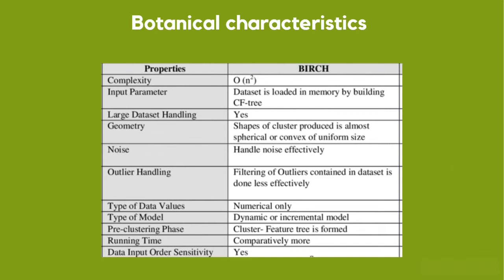What are its main characteristics? Its complexity is O(n squared). The input parameter dataset is loaded in memory by building a CF tree. Larger dataset handling: yes. Geometry: the shape of clusters produced is almost spherical or convex of unit size. Noise: handles noise effectively. Outlier handling: filtering of outliers contained in the dataset is done less effectively. Type of data: numerical only. Type of model: dynamic or incremental model. Closing phase: cluster filter through its format. Running time: comparatively more. Data input essentially: yes.